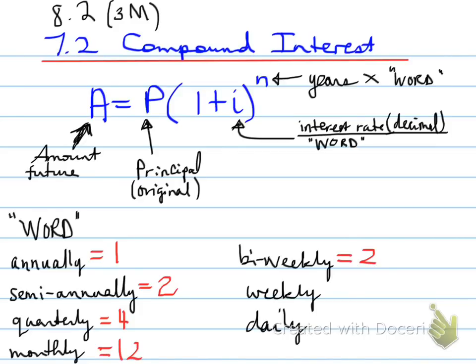Bi-weekly means 26 times a year. Weekly means 52 times a year. And finally, daily means 365 days a year. So, each of these words translate to numbers that we would either divide when we're working with i or multiply when working with n.